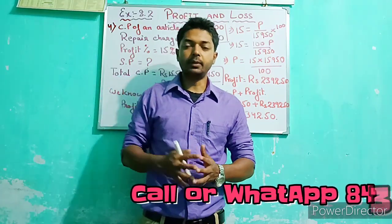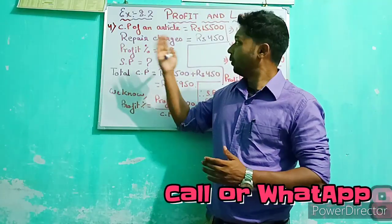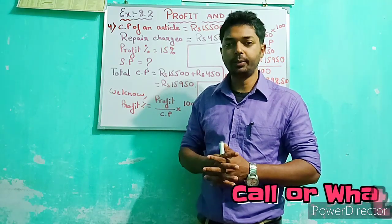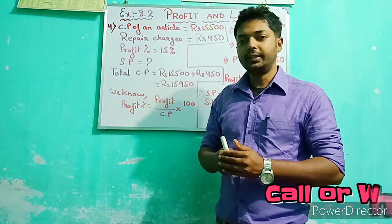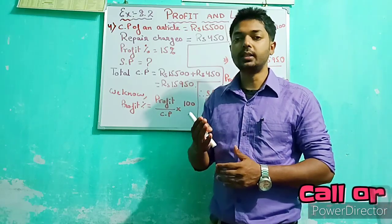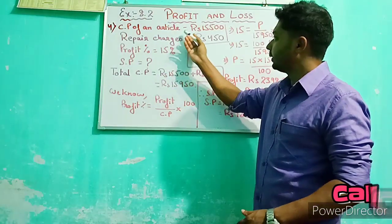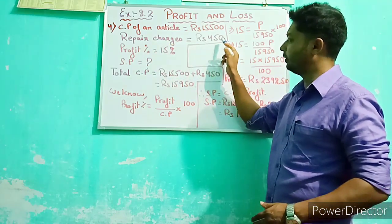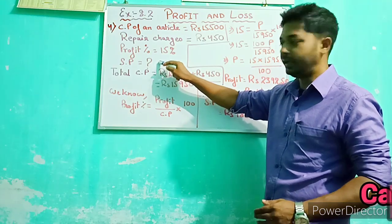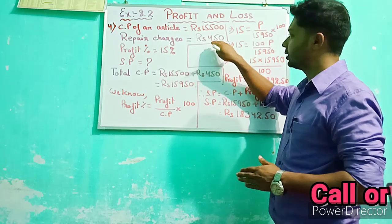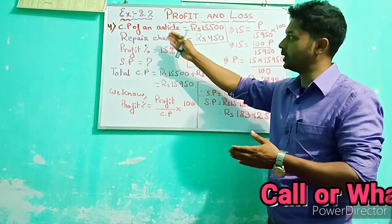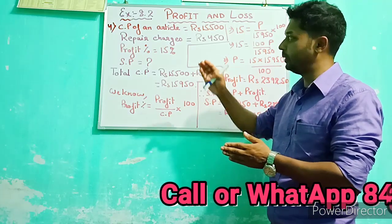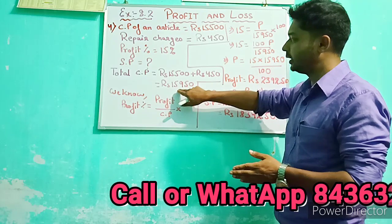Let's come to sum number 4. A person bought an article for Rs. 15,500 and spent Rs. 450 on repairs, then sold it at a profit of 15%. What was his selling price? The CP of the article is Rs. 15,500 and repair charges are Rs. 450. Since repair charges are associated with the cost price, the total CP becomes Rs. 15,500 plus Rs. 450, which is Rs. 15,950.